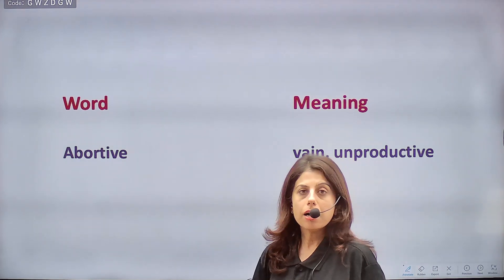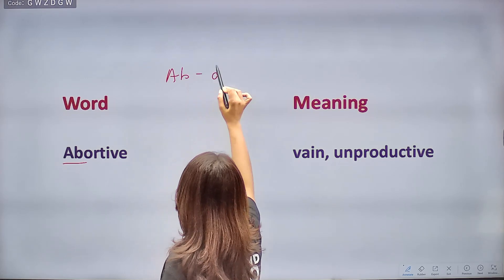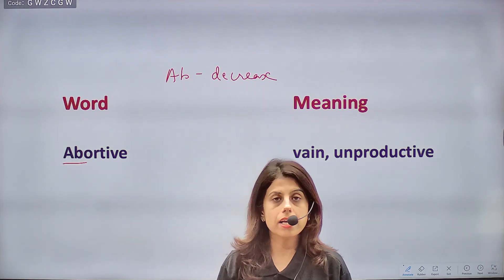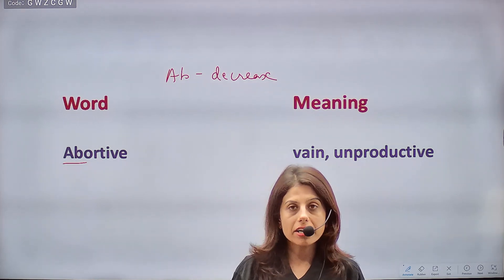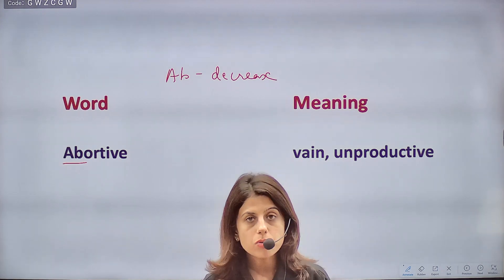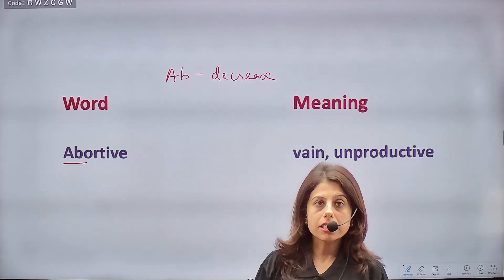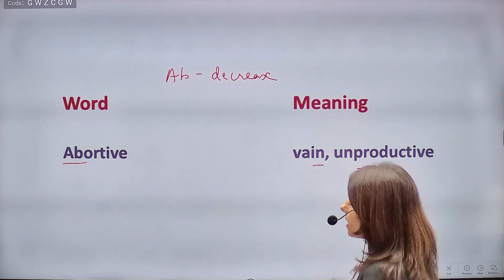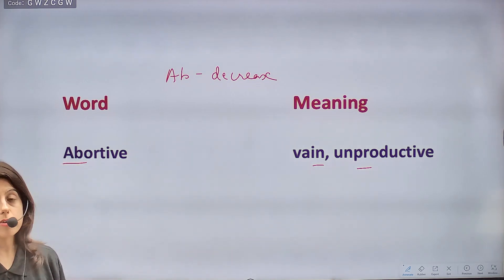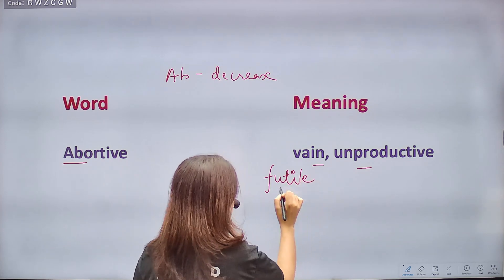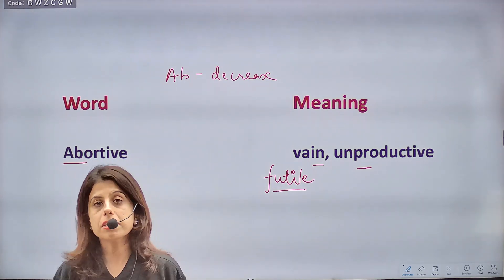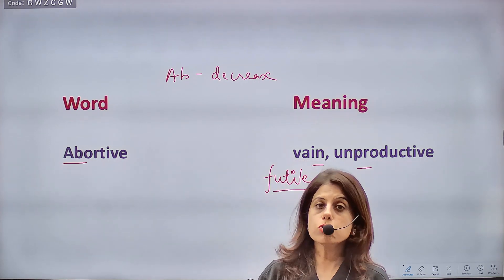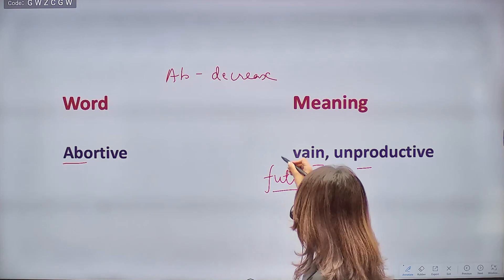The first word is ABORTIVE. The root word 'ab' means decrease or something becoming less. So words starting with 'ab' generally mean something coming to an end or decreasing. Abortive means anything that is completely waste or useless — if you made efforts and they were of no use whatsoever, that is abortive. Synonyms: vain, unproductive, futile — futile is a very important word to remember.